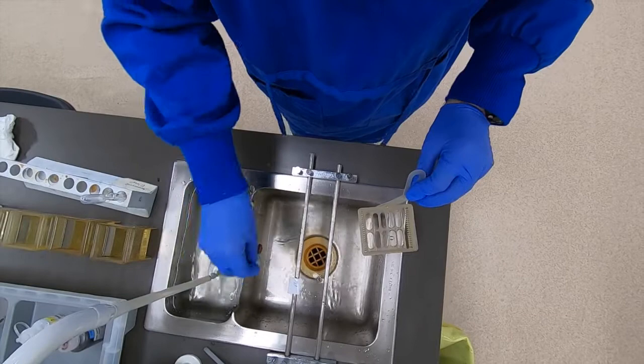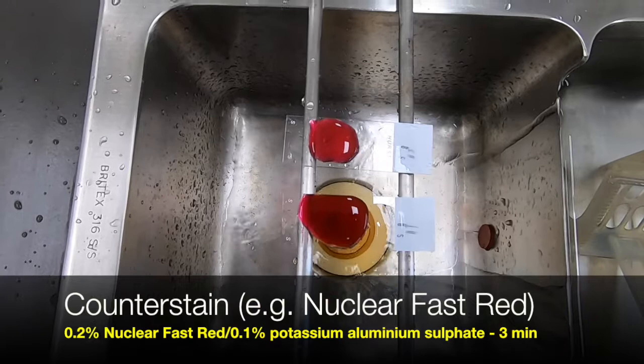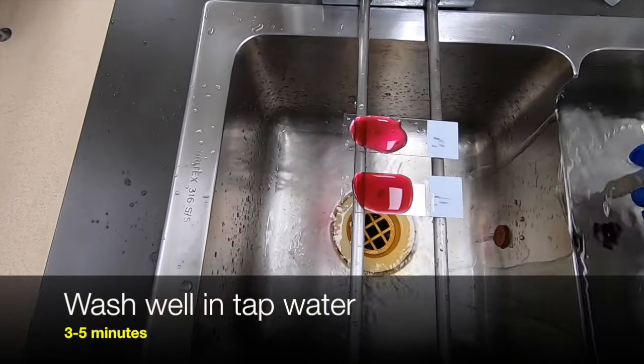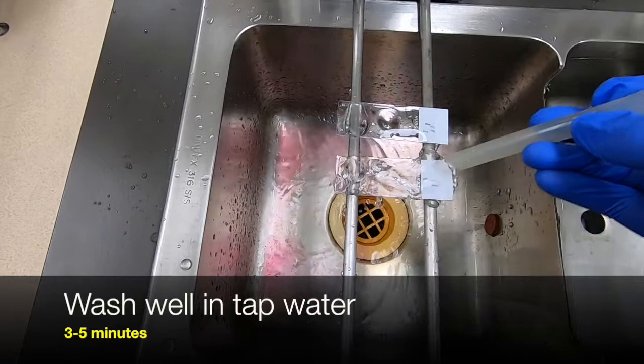Now once we're happy with the rinsing to remove the sodium thiosulfate, you can go into any counter stain that you choose to use. So in this case we're using Nucleofast Red. And then we give that a good rinse. This particular counter stain requires a fairly lengthy rinsing step just to clear all the excess.